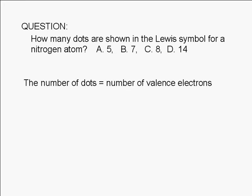The number of dots shown in the Lewis symbol for an atom is equal to the number of valence electrons. Valence electrons are the electrons in the outermost shell of the atom. A nitrogen atom has 7 electrons.